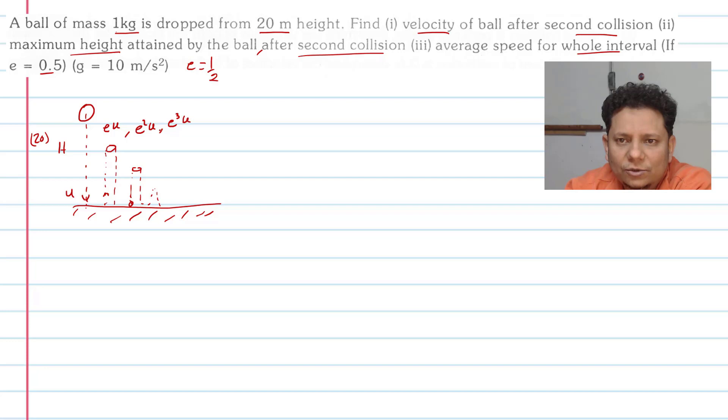Third time, your velocity is e³·u. This is your velocity after every collision along LOC. This line of collision, along this your velocity is e·u.